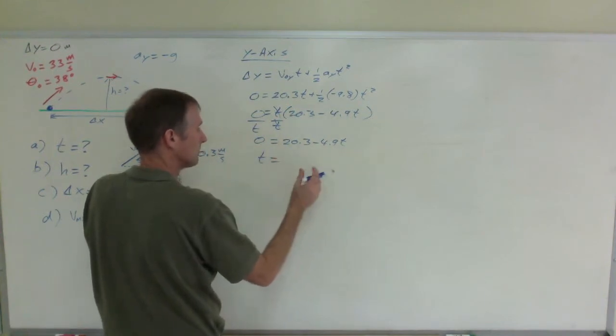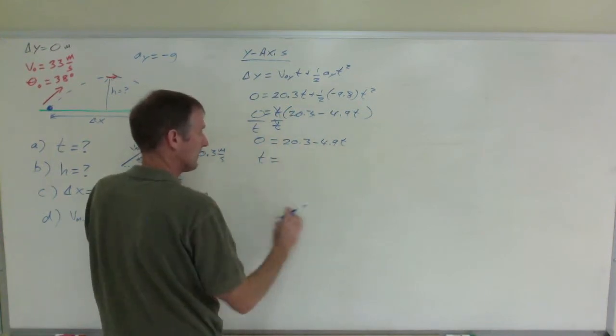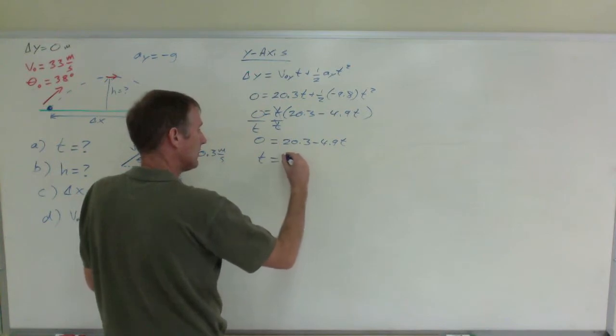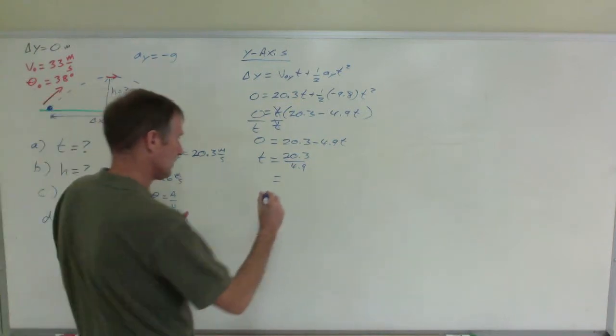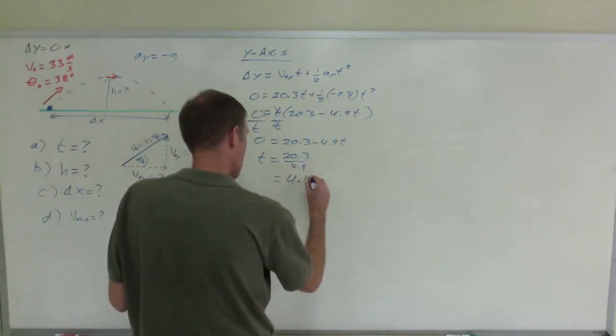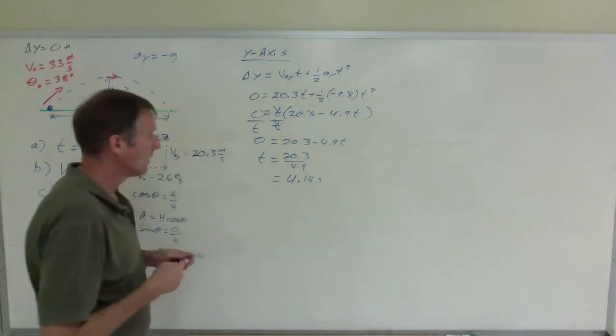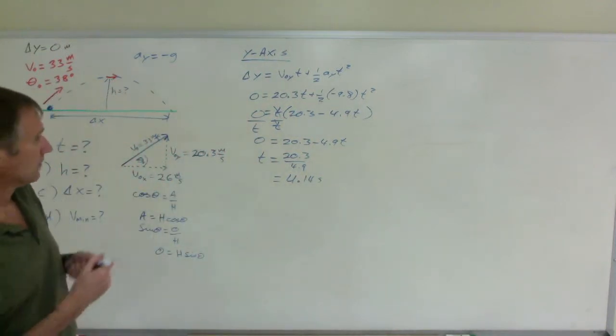So when you solve for t, I am going to add that to the other side and then divide through. I get 20.3 divided by 4.9, and that comes out to be 4.14 seconds. Okay, so that is part A.